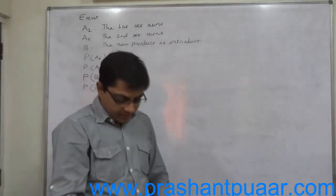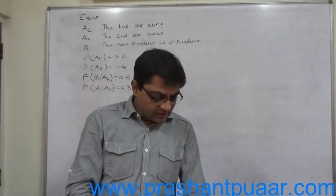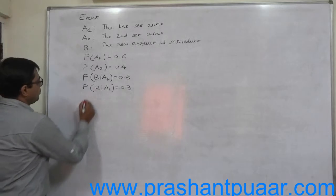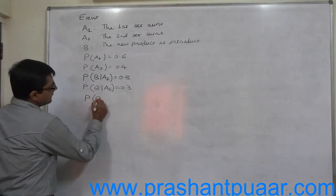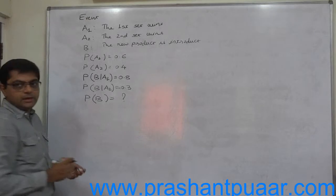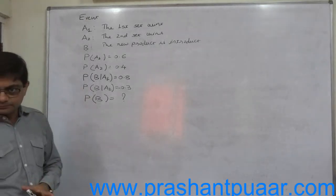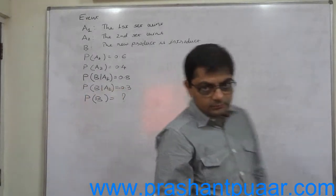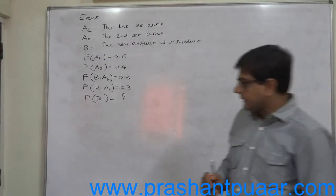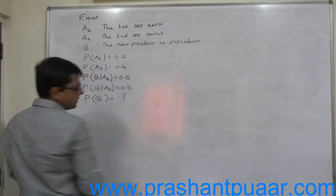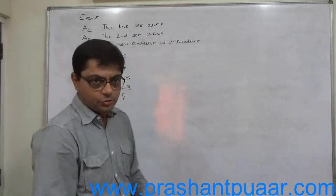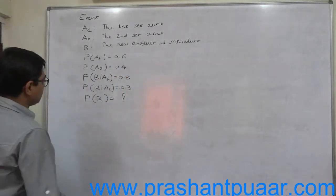What is the question? What is the probability that the new product will be introduced? As a final answer, we require to find out the probability of B. We are going to use the tabular approach because that is the easiest approach for solving these problems.